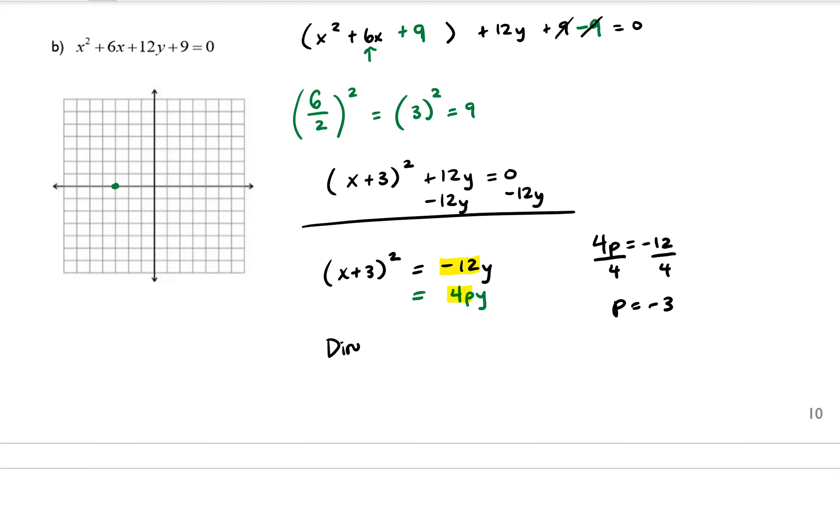And if p = -3, then our directrix is going to be the line y = 3. So I'm going to go ahead and plot that. Here's my y-axis. Here's my x-axis. I know that my focus is going to be at (-3, -3). So I'm starting at the vertex and then moving down 3 units.